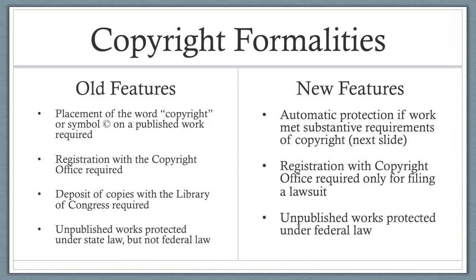Until fairly recently, there were a number of formalities that had to be satisfied in order to obtain copyright protection — for example, placement of the word 'copyright' or symbol © on a published work, registration with the Copyright Office, and deposit of copies with the Library of Congress. Unpublished works were protected under state law, but not federal law. Under the 1976 Act, which went into effect January 1, 1978, a work was automatically protected as long as it met the substantive requirements: copyrightable subject matter, originality, and fixation. The 1976 Act also replaced the dual state-federal system, and now unpublished works were protected as well.